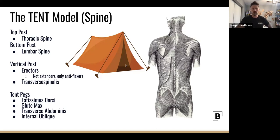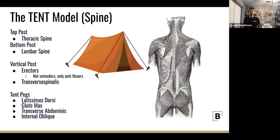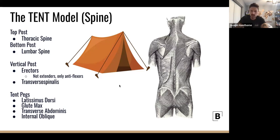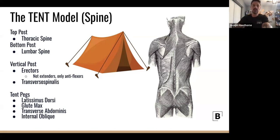Looking at the vertical posts — mostly the erectors and transverse spinals — people with big meaty erectors, you can actually see them sticking up or feel them. It's crucial to note that many people think erectors are designed to extend your spine, but their main goal is actually to keep you from going into flexion or excessive flexion.